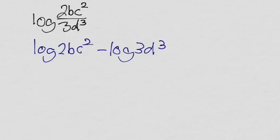And now let's get rid of all these multiplications inside the log as addition outside of the log. So that'll turn into log of 2 plus log of b plus,